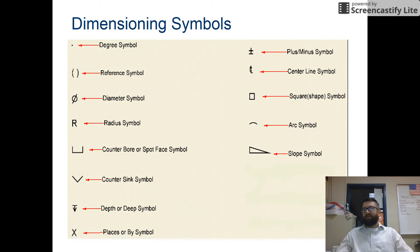So we have various dimensioning symbols that you need to be aware of. The degree symbol, reference symbol is a parenthesis, diameter, you've seen this before, which is a circle with a line through it. R, you've also seen that before, which is a radius, counterbore, countersink, depth. These are all hole symbols, which we'll get to as we go along. Plus, minus, centerline, square, etc. So this slide you're going to need to come back to quite a bit as you're dimensioning things.